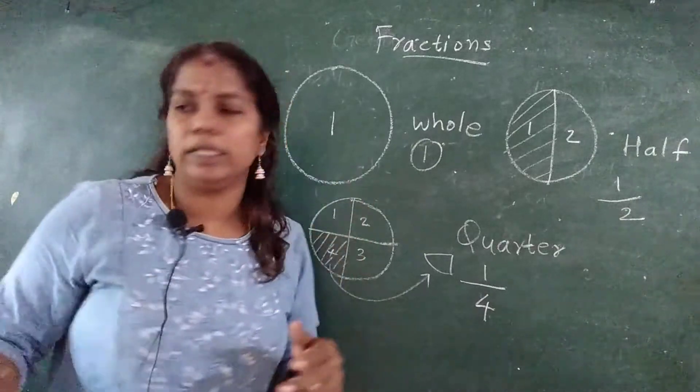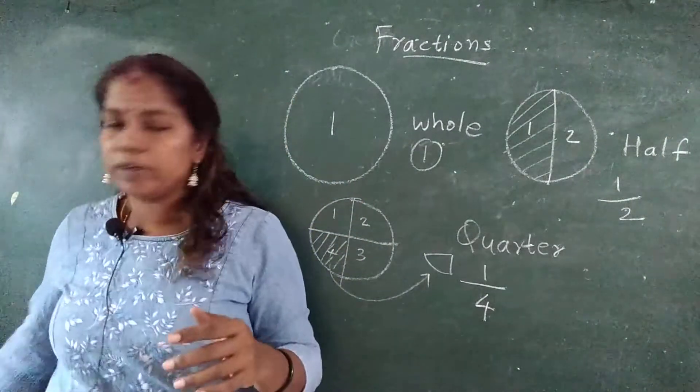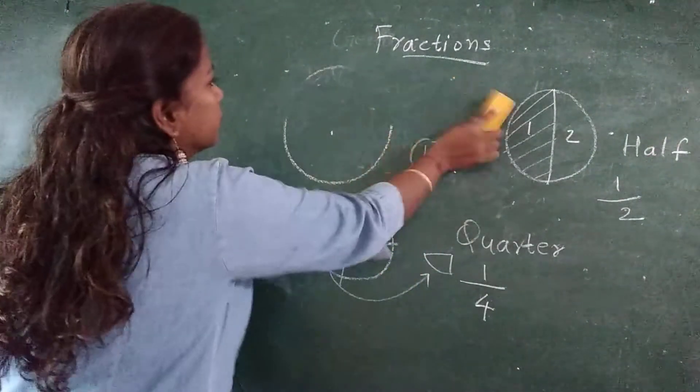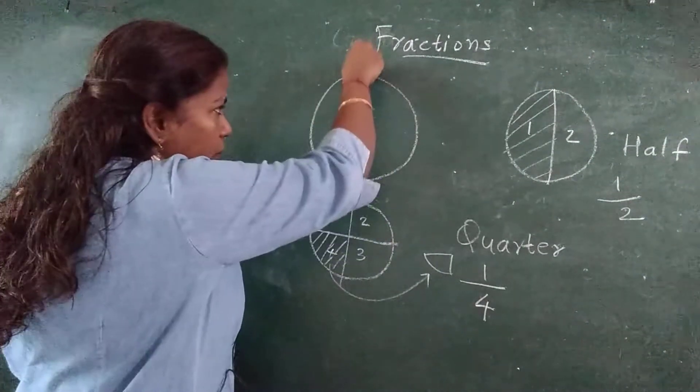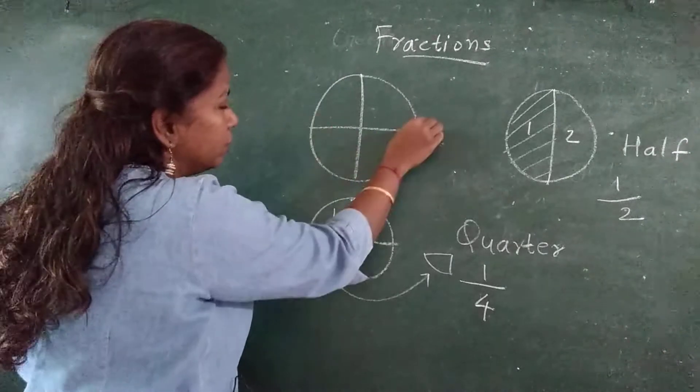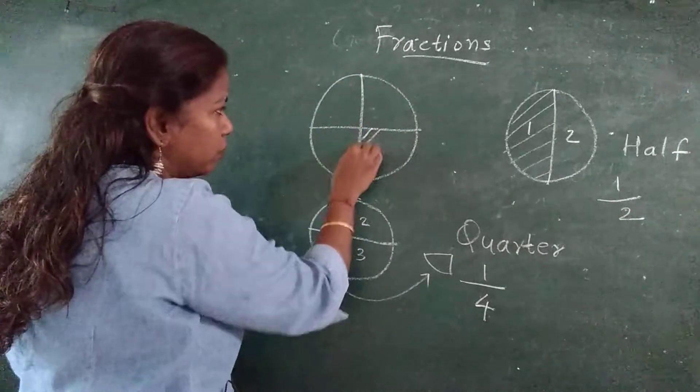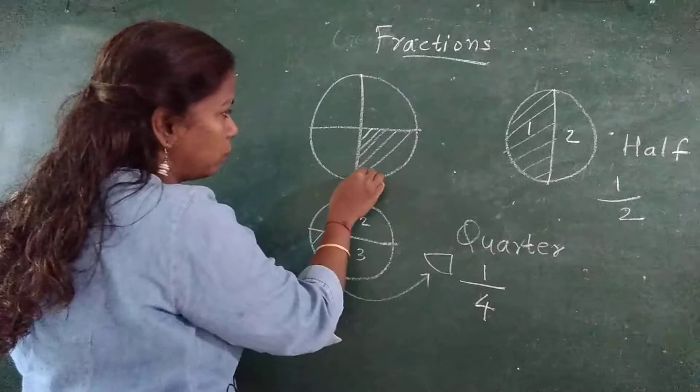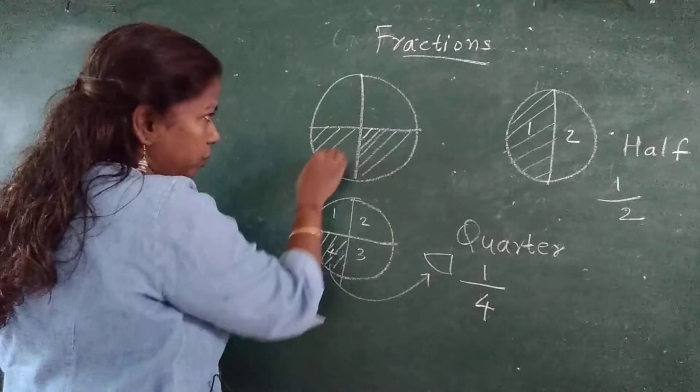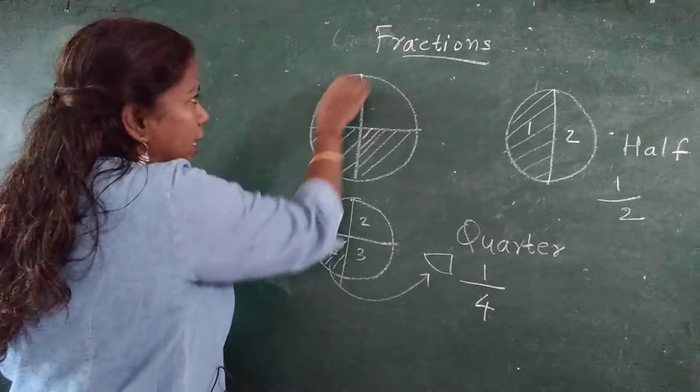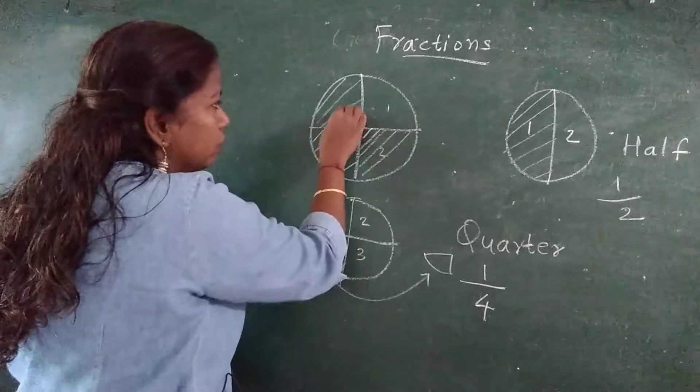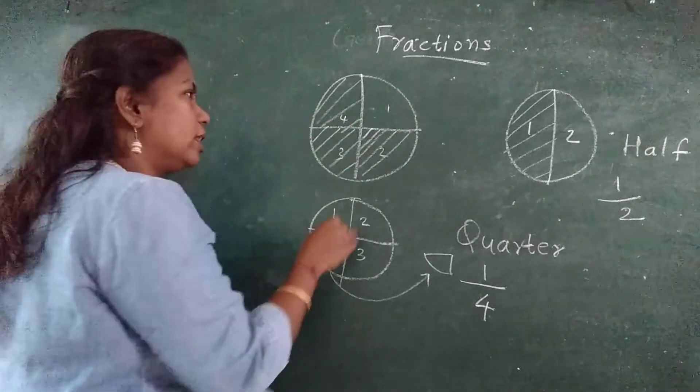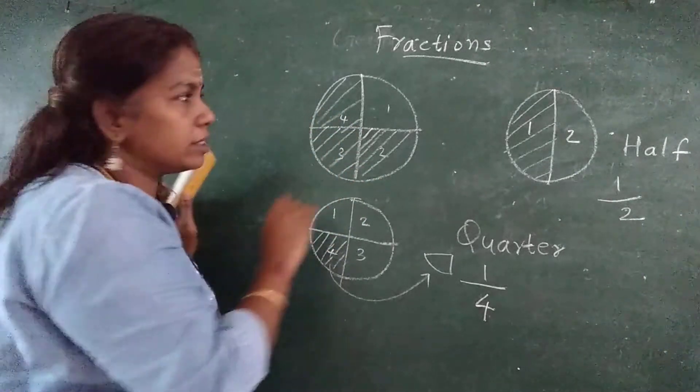Now one more thing. For the whole, half, quarter, now suppose if I shade one, two, and one more, three. One, two, three, four are there. Now in that I have shaded three parts.